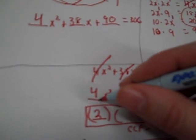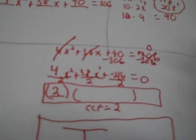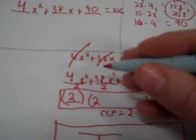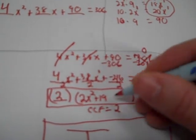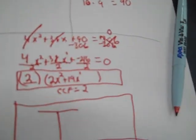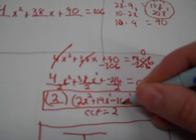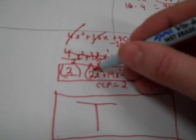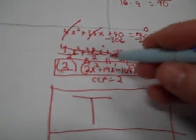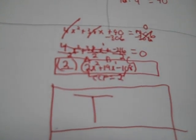Dividing each term by 2: 4 ÷ 2 = 2x², 38 ÷ 2 = 19x, negative 216 ÷ 2 = negative 108. So we have 2(2x² + 19x − 108) = 0. Now applying the AC method from inside the parentheses: a = 2, c = −108, so a times c = −216.